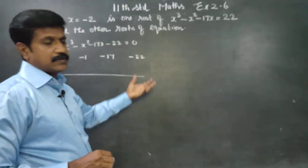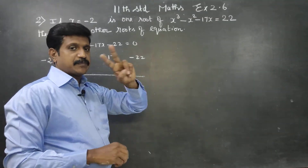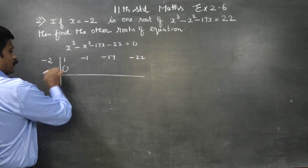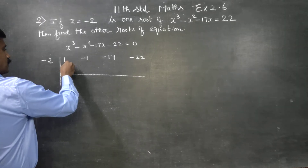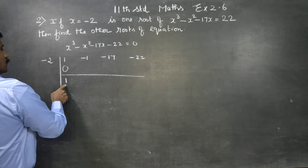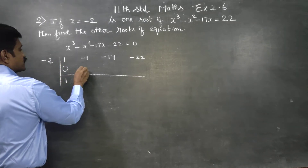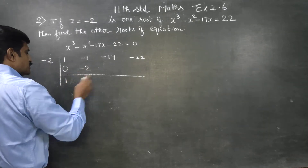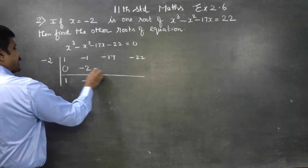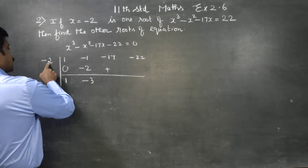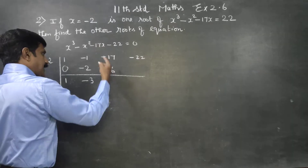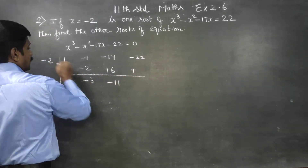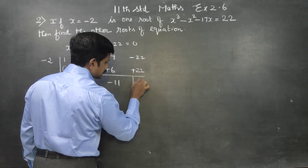We divide using synthetic division where the remainder is 0. Bring down 1. Multiply: 1 into minus 2 is minus 2. Add to minus 1 to get minus 3. Minus into minus gives plus: 3 into 2 is 6. Add to minus 17 to get minus 11. Minus into minus gives plus: 11 into 2 is 22. Remainder is 0.